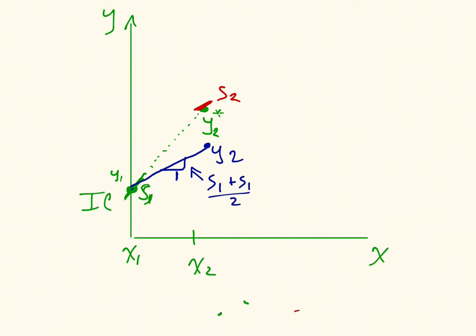So y2* is our predictor step. Y2 is our actual update. And that is Huen's method.